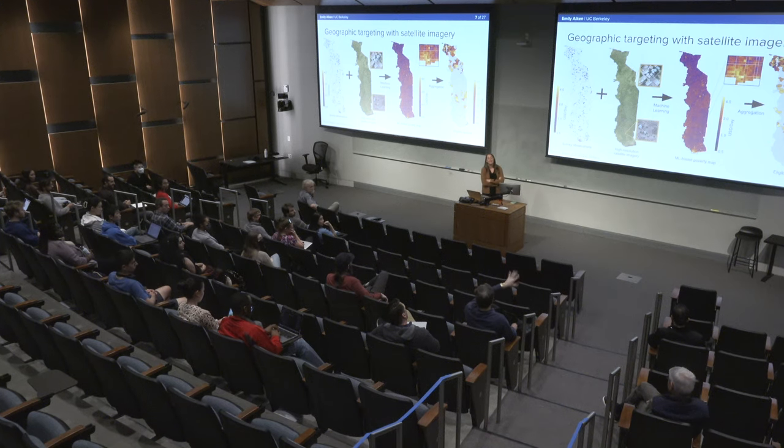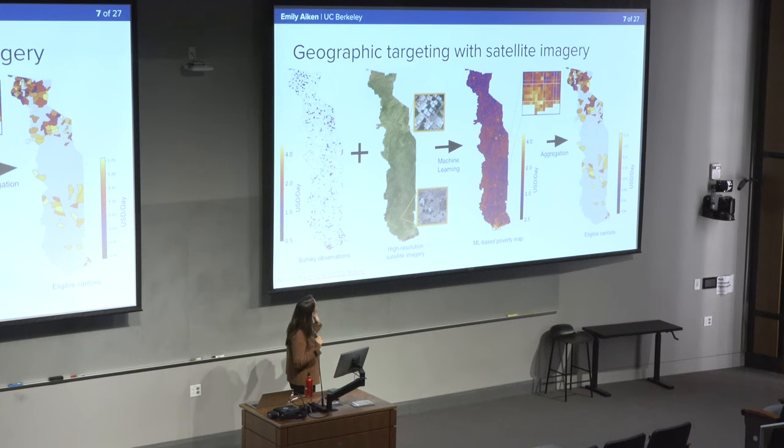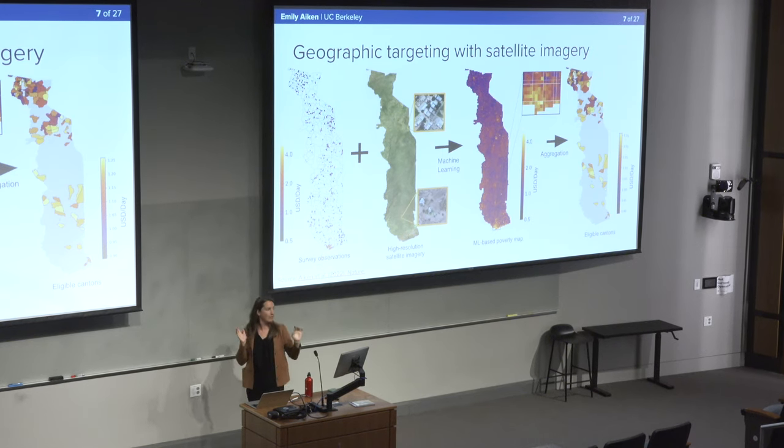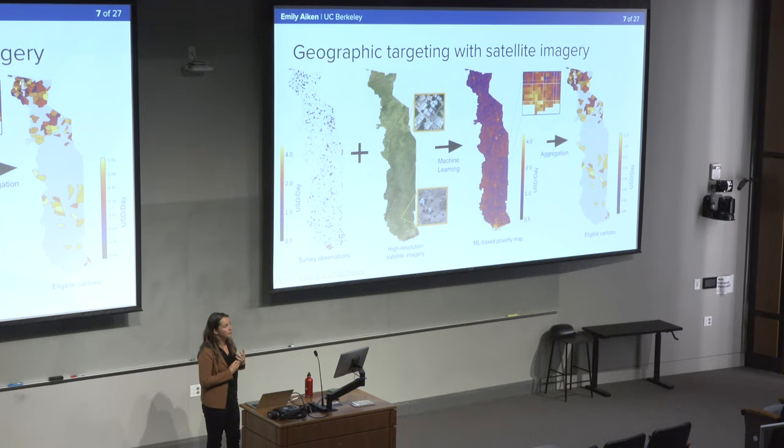Regarding the 100 selected cantons, the population there is actually quite low — about 500,000 people — because population distribution is not uniform. Much of Togo's population is concentrated in the capital city, while the most rural areas, which are also the poorest, have much lower population density. So while 100 cantons sounds large, the actual population in those areas is relatively small.